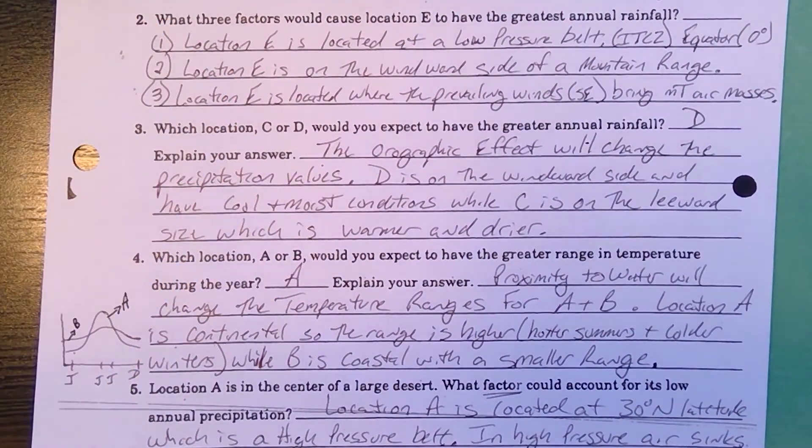To describe that, location A is at a high pressure belt. In high pressure, the air sinks. You remember sinking air compresses and warms. You have clear skies and very little chance of precipitation.